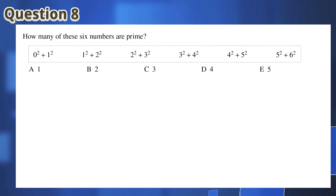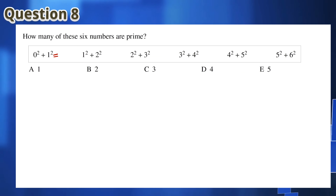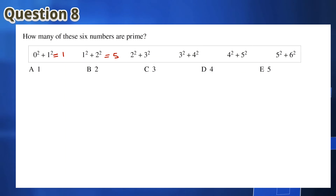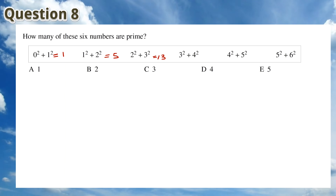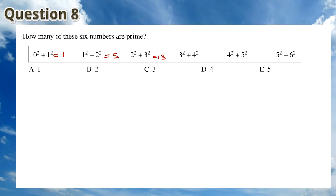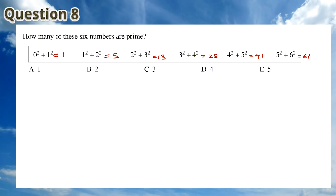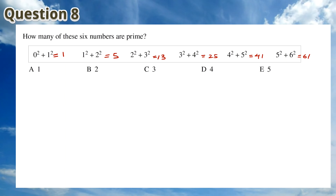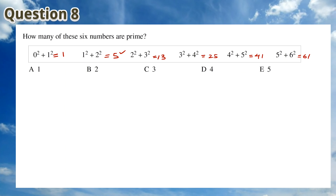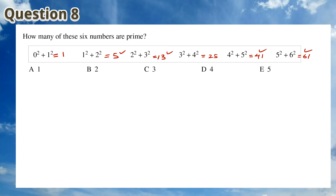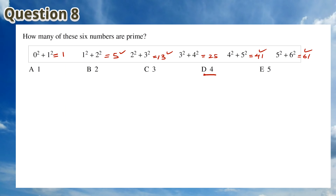For Question 8, we can find the sums of each of these equations. The first one is 1, the next is 5, then 13, then 25, then 41, and the next is 5. Out of these 6 numbers, only 4 are primes. This means that the answer is D.